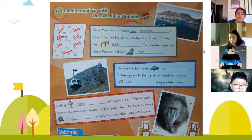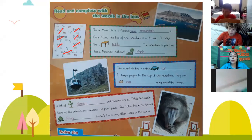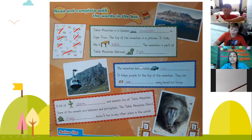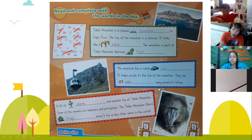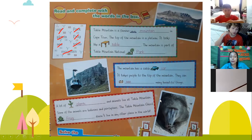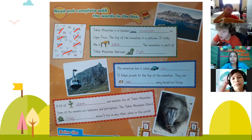Let's read together: Table Mountain is a famous mountain in Cape Town. The top of the mountain is a plateau. It looks like a table. The mountain is part of Table Mountain National Park. The mountain has a cable car. It takes people to the top of the mountain. They can see many beautiful things. A lot of plants and animals live at Table Mountain. Some of the animals are baboons and porcupines. The Table Mountain ghost frog doesn't live in any other place in the world.